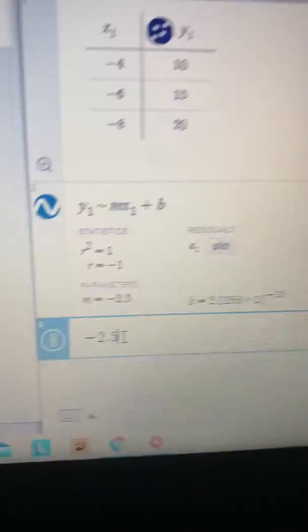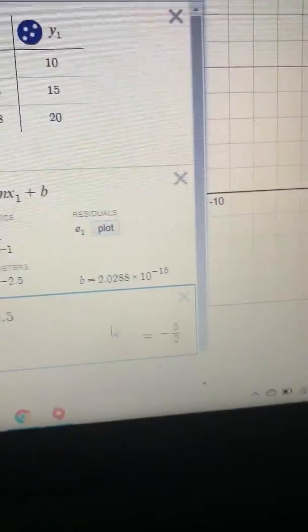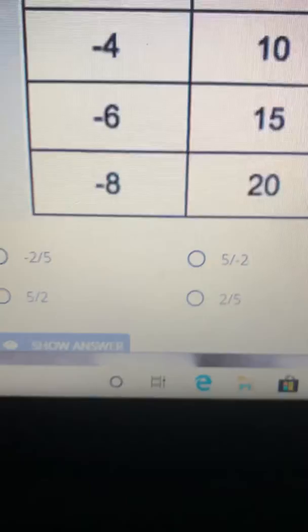just type it in here and press that. And look, it shows negative 5 over 2. Then you look for your answer, and